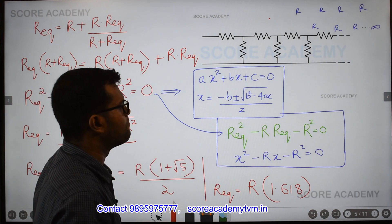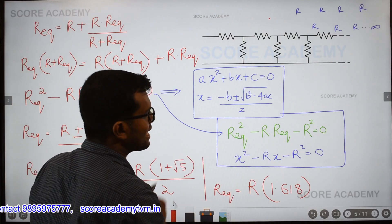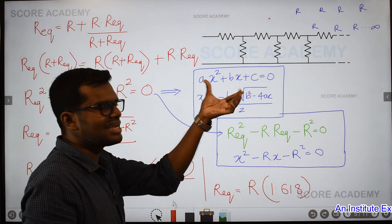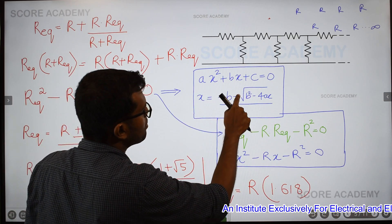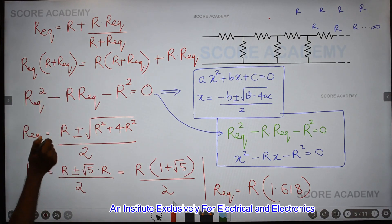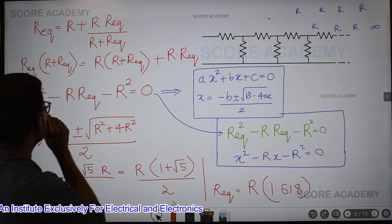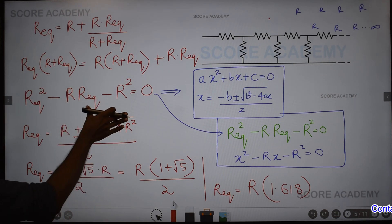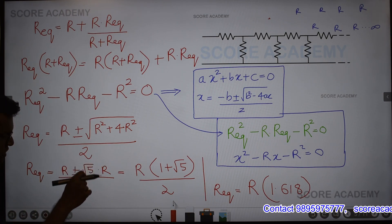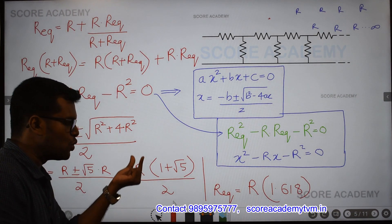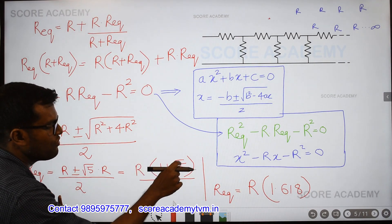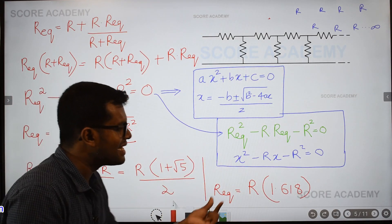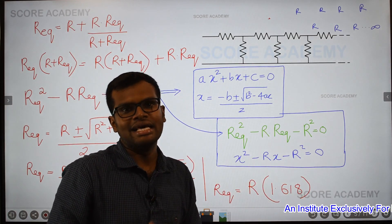This is the same formula — the polynomial derived from this circuit equation is x² − x − 1 = 0, whose positive root is the golden ratio 1.618, confirming our shortcut.